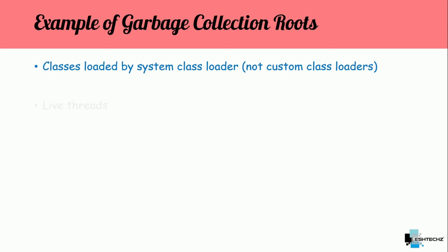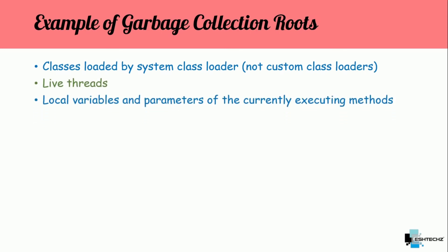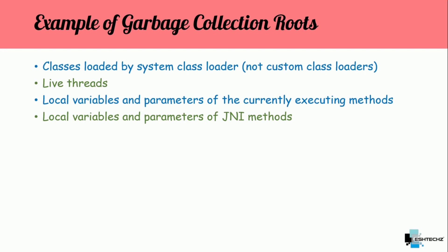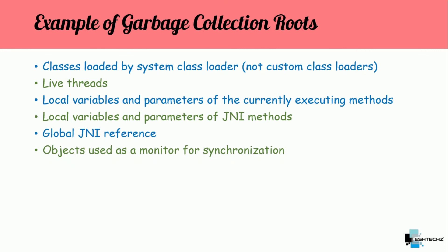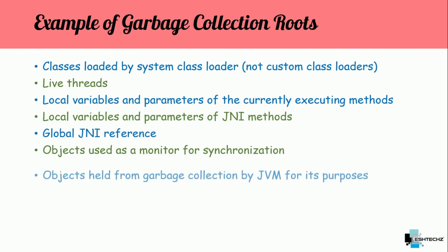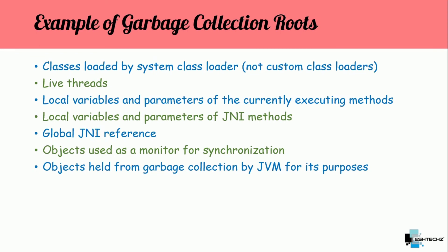Other GC root examples include: live threads; local variables and parameters of currently executing methods; local variables and parameters of JNI methods; global JNI references; objects used as a monitor for synchronization; and objects held from garbage collection by the JVM for its own purposes. All of these can act as GC roots wherever the garbage collector requires to mark all the live objects.